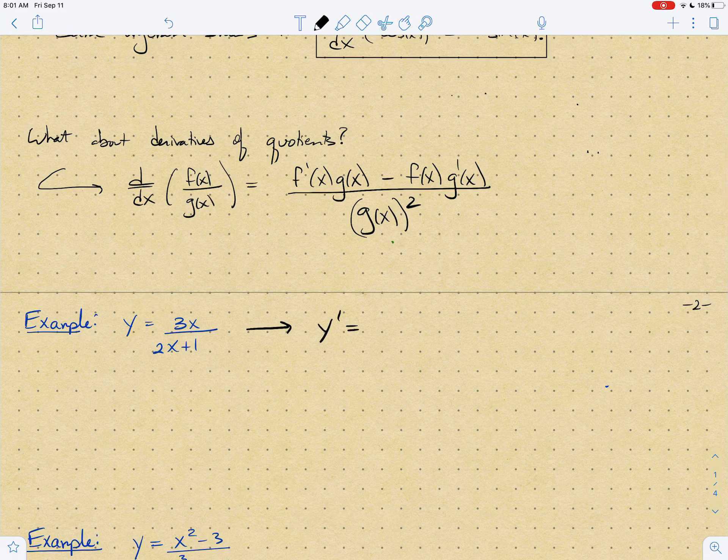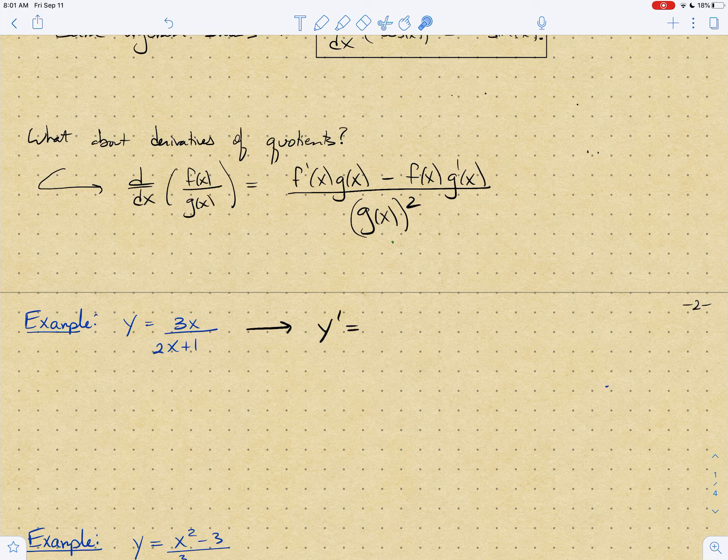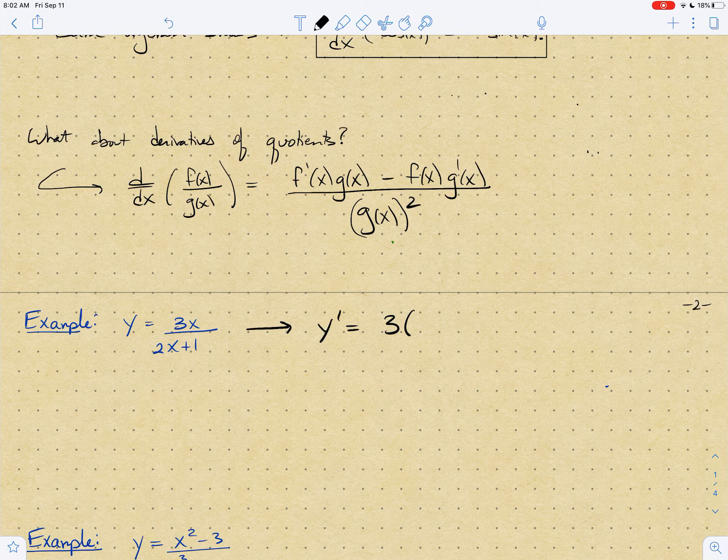y prime is... I want to take the derivative of the top and I get out a 3. So this is going to be 3 times the bottom, which is 2x plus 1. Then I want to subtract.